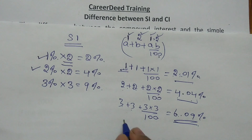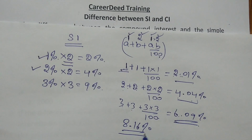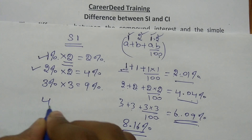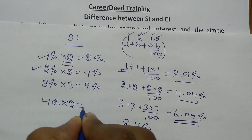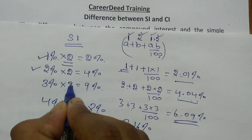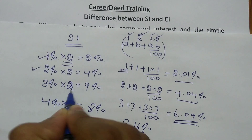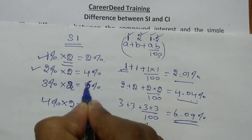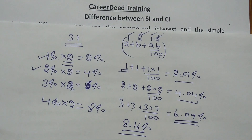So if it is 4% per annum: 4 × 2 = 8 for simple interest, and for compound interest 4 squared gives 0.16%, so CI = 8.16%. For simple interest: 4% × 2 = 8%. And for 3% for 2 years, simple interest is 3 × 2 = 6%. For 4% for 2 years, simple interest is 4 × 2 = 8%.